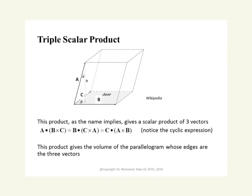We discussed in previous lectures the scalar product and the vector product. There is another type of product which involves three vectors, a, b, and c. It's called the triple scalar product, and as the name implies, it gives a scalar — a number. We cross product two of these vectors, and then the resulting vector is dot-producted with the third one.